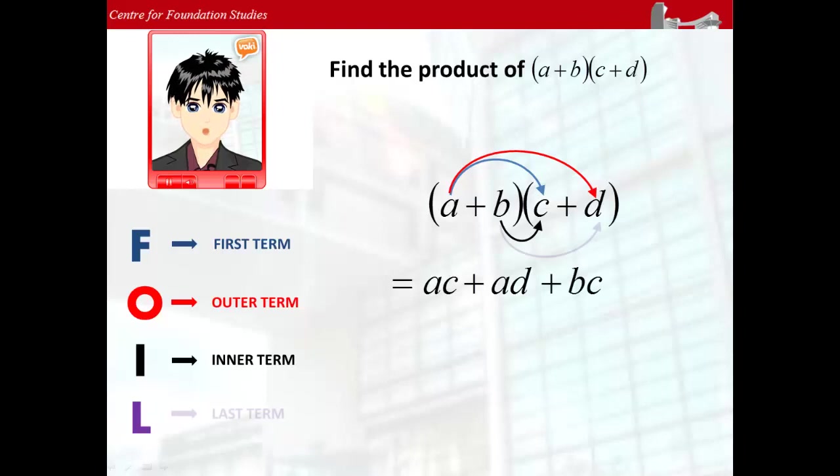Lastly, for the letter L, we multiply the last term in each bracket, resulting in positive bd.